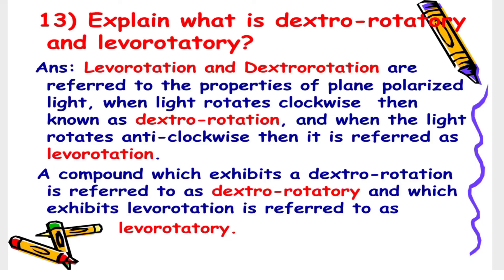Next: Explain what is dextrorotatory and levorotatory. The answer is levorotation and dextrorotation refer to the properties of plane polarized light. When light rotates clockwise it is known as dextrorotation, and when light rotates anticlockwise it is referred to as levorotation. A compound which exhibits dextrorotation is referred to as dextrorotatory, and one which exhibits levorotation is referred to as levorotatory.